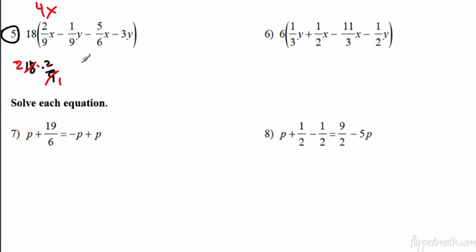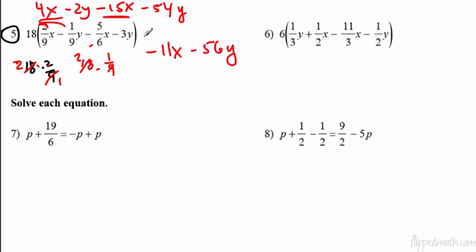And then I do the same process all over again. So we have 18 times 1 ninth. That's going to be the second loop we have here. We have the 18 and the 9, they cancel. It's just like the first one. So we're going to get 2y minus 2y because there's a negative there. Same process. I'm just going to talk through it. So we have 18 and 6, they will cancel, leave a 3. 3 times 5 will give you a negative 15x. And then this is just a 3 over 1, so I just need to multiply those two. That's going to give me a negative 54y.